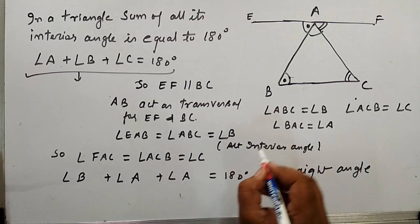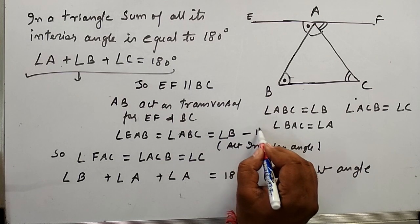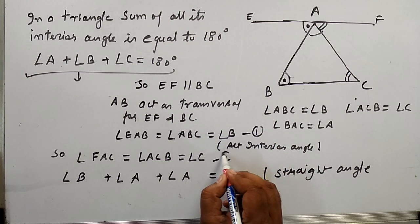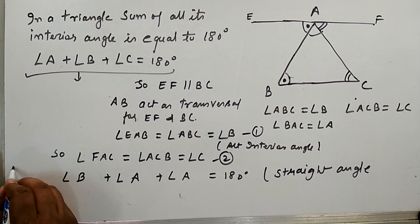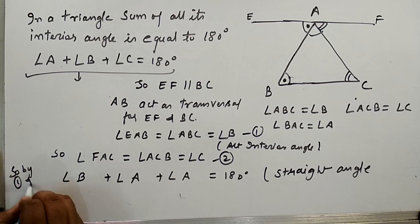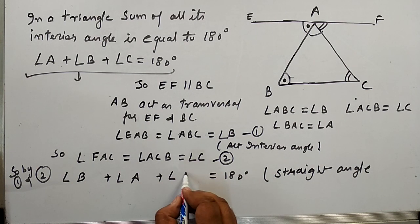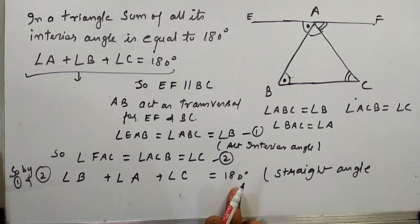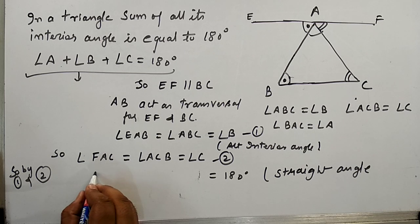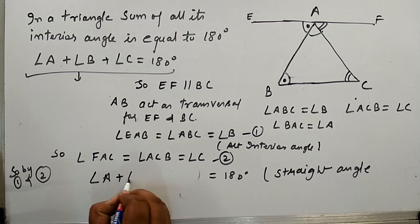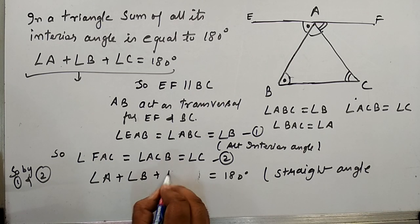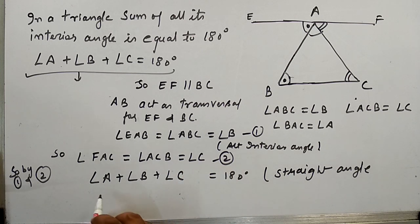So if we substitute, we get angle B plus angle A plus angle C is equals to 180 degrees. Or we can rewrite this as angle A plus angle B plus angle C is equals to 180 degrees.